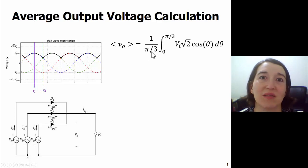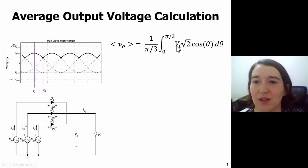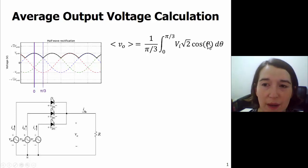Actually we switched to radians. It doesn't matter if you're integrating, so you get to choose. And we integrate from zero to pi over three, and remember that our amplitude is going to be the RMS voltage times root two. So VI is our input RMS voltage and we're using cosine.